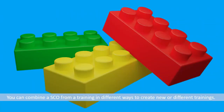You can compare a SCO to a single Lego block. Using the same Lego blocks, you can create different outputs like a building, house, vehicle, etc. Similarly, you can combine SCOs from a training in different ways to create new or different trainings. For example, if you have a training curriculum with 10 courses and each course should have the same leadership video at the beginning, you don't need to separately add this video in each course. Just add this video as a SCO in the first course and reuse it in all the other nine courses.